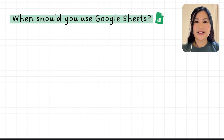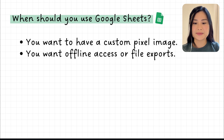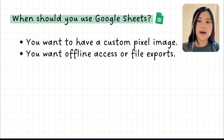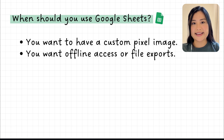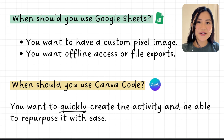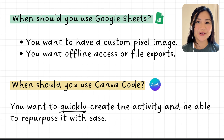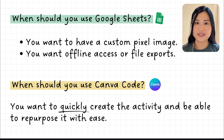So let's summarize. Use Google Sheets if you want a custom pixel image exactly how you want it, or if you want offline access and file exports — students can download the template, work offline in Excel, and submit the document. Use Canva Code if you want to quickly create the activity and repurpose it with ease. You can quickly change the topic, subject, art image, or levels of difficulty with just a little prompting, making the activity more versatile.